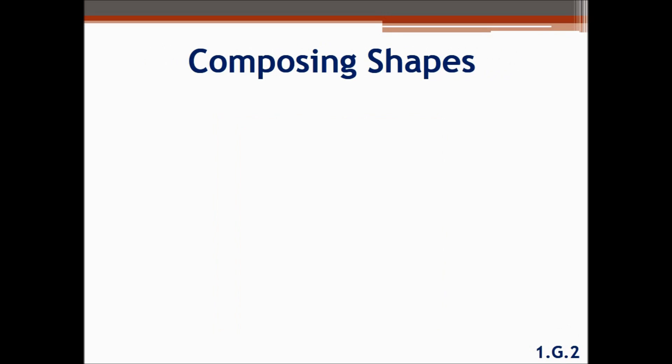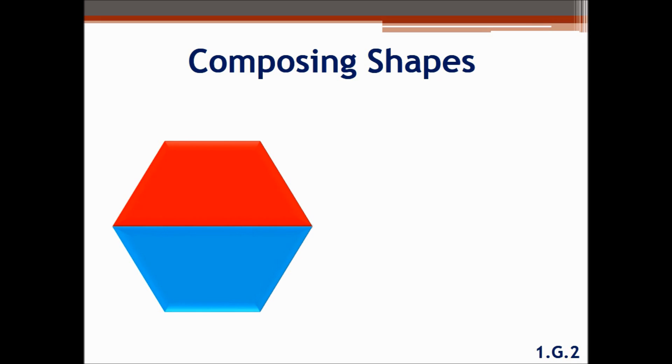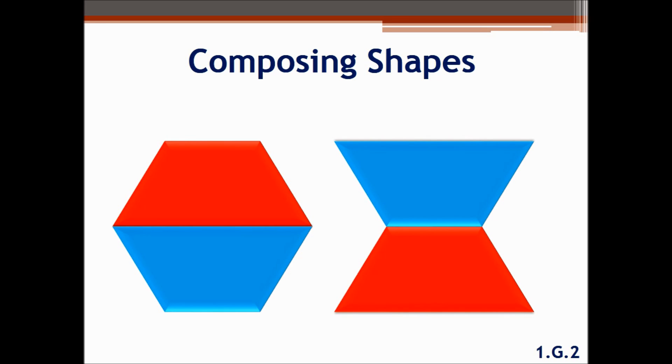Standard G2 has two parts. First, we compose simple shapes to make a new shape. It may be that students put two trapezoids together to make a hexagon. However, it may also be that students put two trapezoids together and make a new shape that doesn't have a familiar name. Either option is valid.